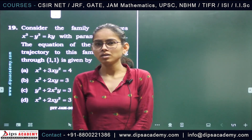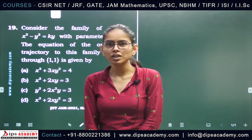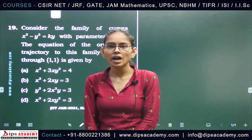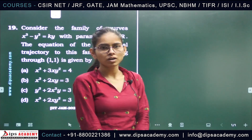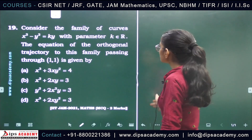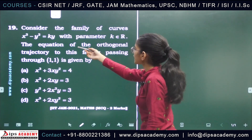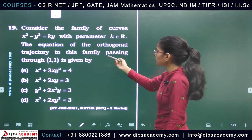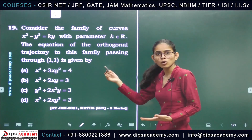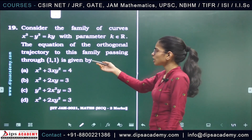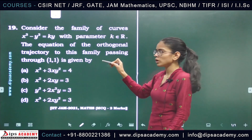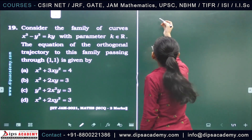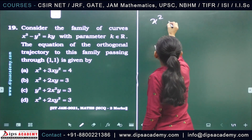Hello everyone and welcome back. Today we will be discussing the JAM 2021 ordinary differential equation question, which is on the topic of orthogonal trajectories. We have to find the orthogonal trajectory of the given family of curves: x squared minus y squared equals ky, where the parameter k belongs to real numbers. We need to find the equation of the orthogonal trajectory passing through the point (1, 1).